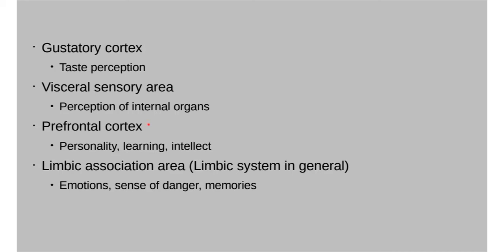The prefrontal cortex is where a lot of your personality comes from, along with learning and intellect. These are really big things that the brain does, and they're not completely narrowed down to one single area — it's an interplay between different parts of the brain. But a lot of your personality arises from the front portion of your brain, the frontal lobe.